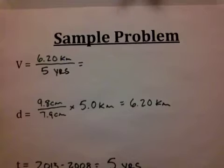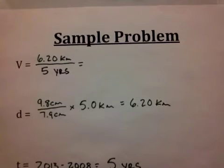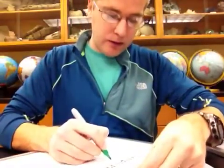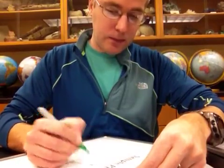We are now ready to plug this into our calculator to figure out what the rate is. We take 6.2 kilometers divided by 5 years and we find that the delta has grown at a rate of 1.24 kilometers per year.